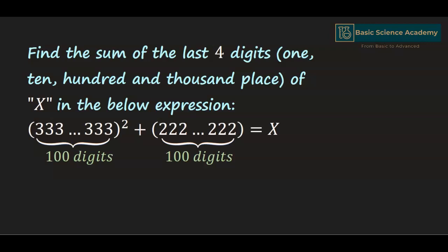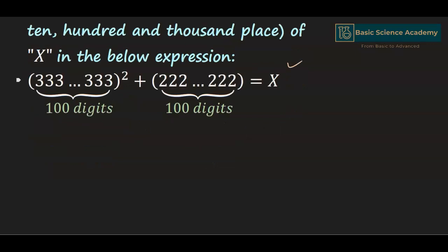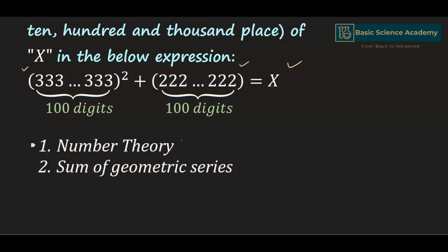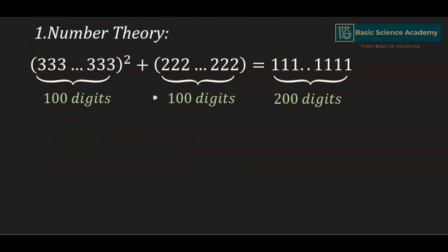In this video, we are going to solve the problem: find the sum of the last four digits of x in this expression. In the given expression, we have the square of a number having 100 digits of 3, added to another number having 100 digits of 2. We can find this sum by using two different methods: the first one is by using number theory, and the second one is by using the sum of a geometric series. Let's start from the first method.